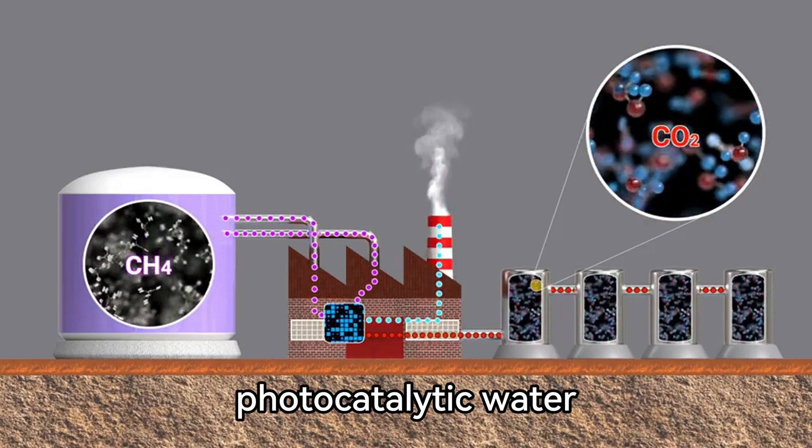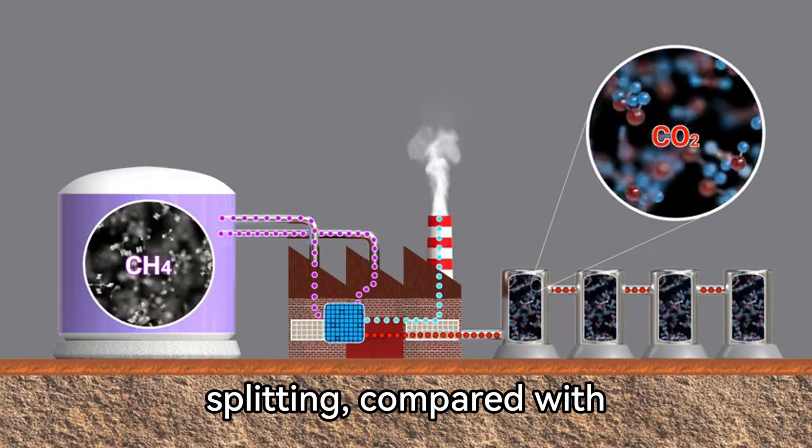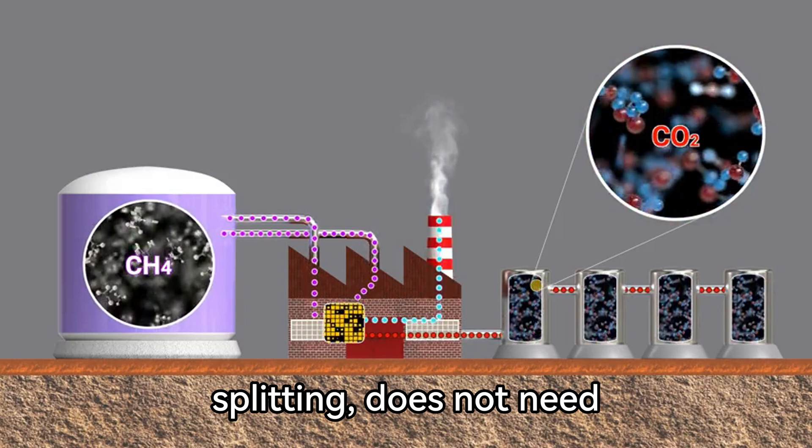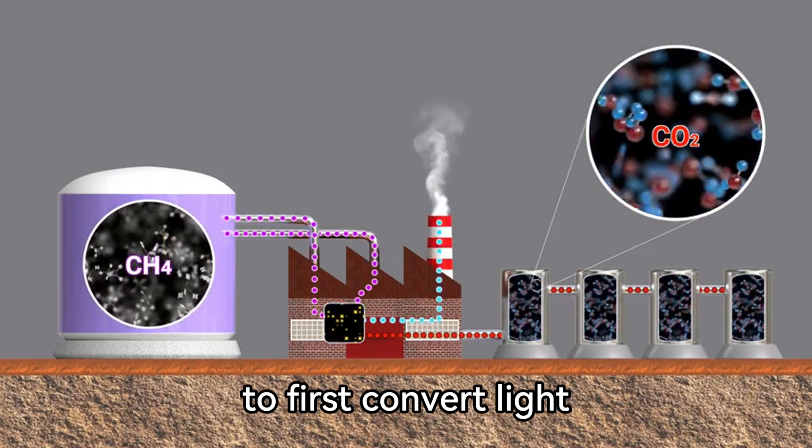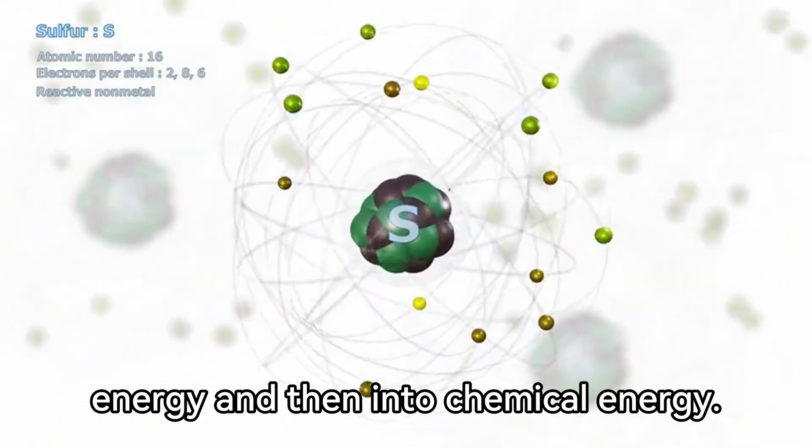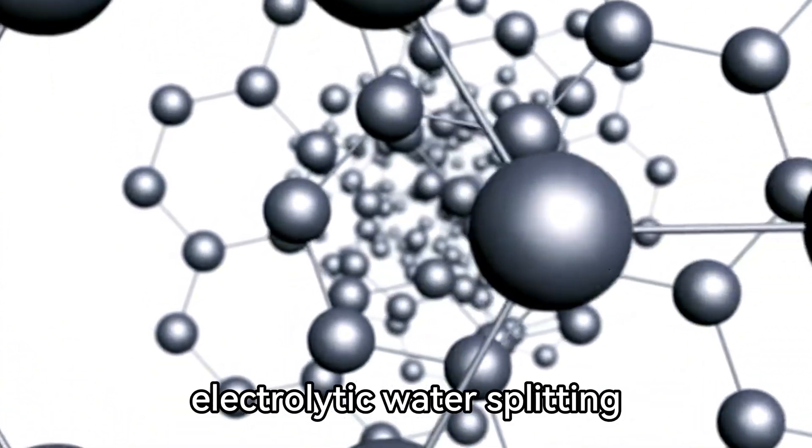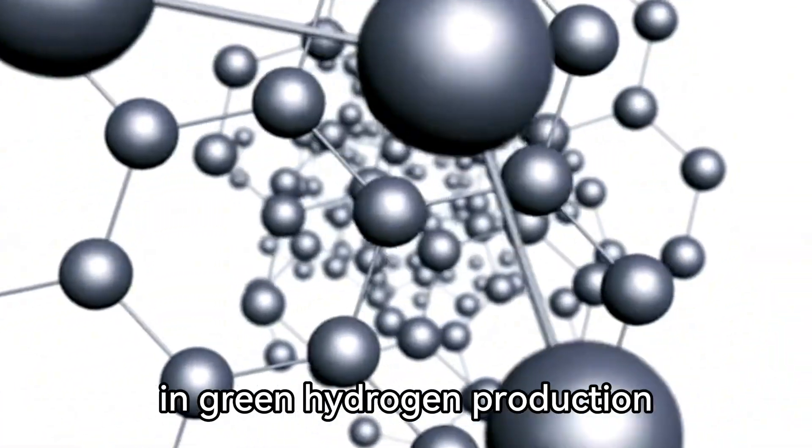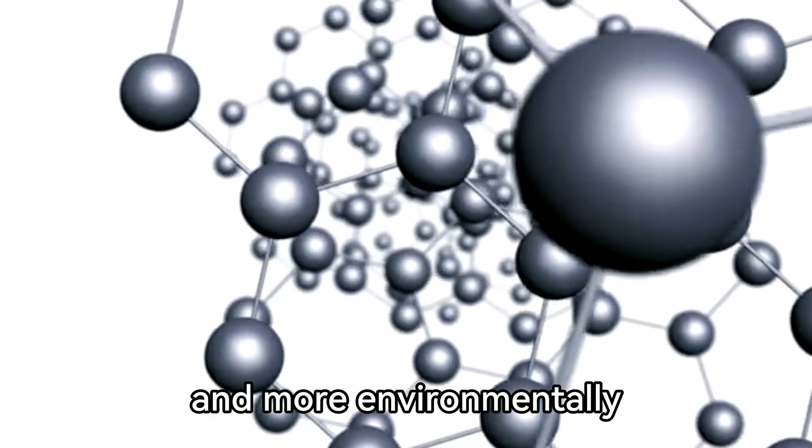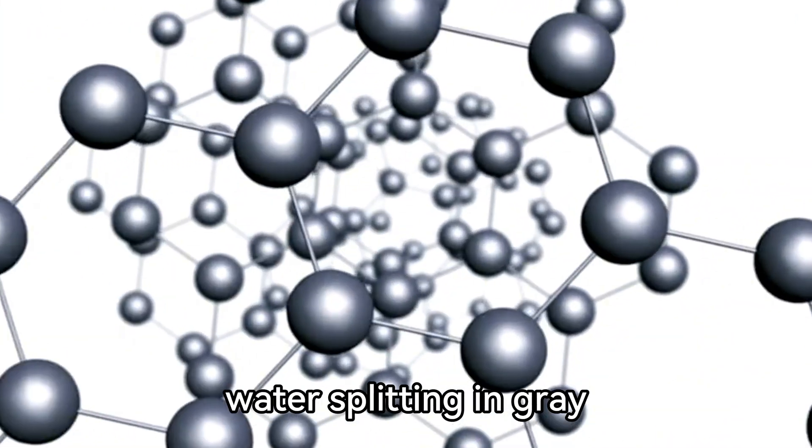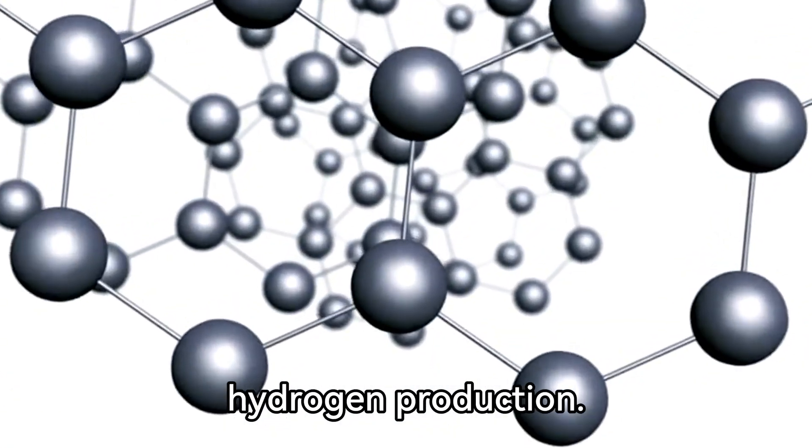In contrast, photocatalytic water splitting, compared with electrolytic water splitting, does not need to first convert light energy into electrical energy and then into chemical energy. It achieves the conversion in one step. Therefore, theoretically, it is more straightforward than electrolytic water splitting in green hydrogen production and more environmentally friendly than electrolytic water splitting in grey hydrogen production.